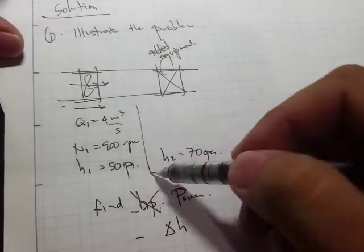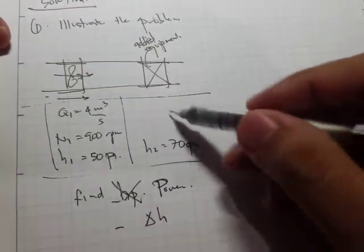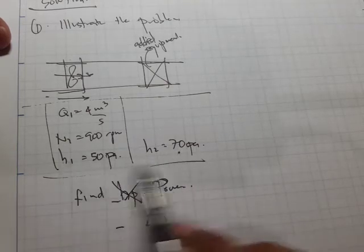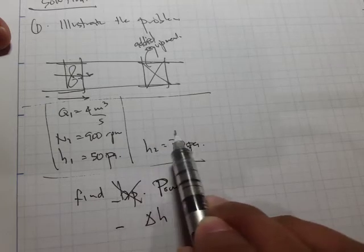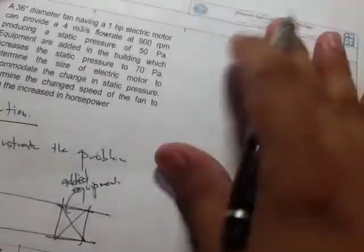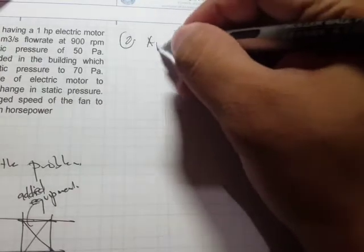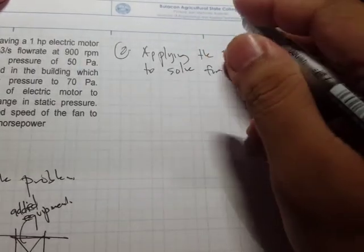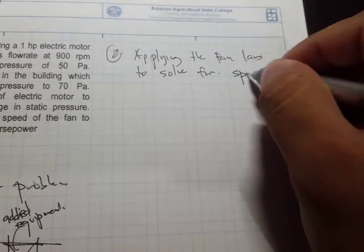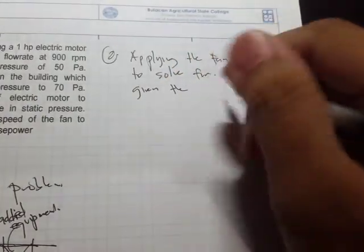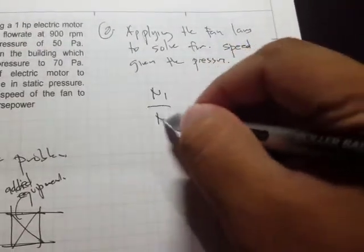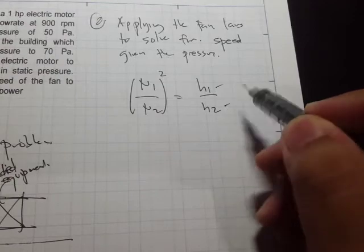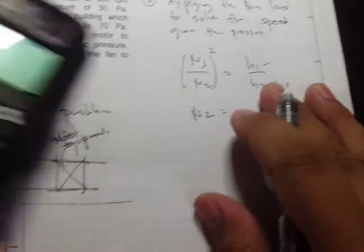Observing the problem, we have initial conditions and final conditions. We only have a value for head or pressure. Applying the fan laws to solve for speed given the pressure: recall n₁ over n₂ equals h₁ over h₂, and for static pressure this ratio is squared. So n₁ = 900 is given, h₁ = 50 and h₂ = 70 are given, so we can solve for n₂. Doing the calculation: 900 divided by n₂ equals the square root of (50 divided by 70).